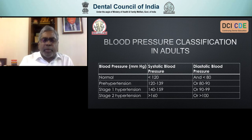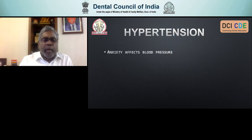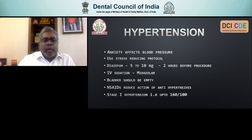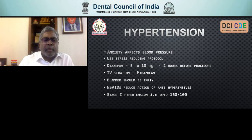Let's look at blood pressure. For stage one hypertension, if you have a systolic pressure above 160 or diastolic above 100, you need to be careful and get it under control before doing an implant. Anxiety affects blood pressure, so for any known hypertensive patient, please use stress reduction protocols. You could use oral sedatives one to two hours before the procedure, or intravenous midazolam. Make sure the patient empties the bladder before sitting in the chair, especially for a long procedure — a full bladder can actually increase anxiety, and if the patient is sedated, it can be even more difficult.